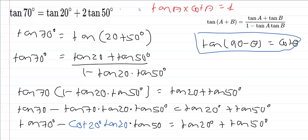In that case, what we are left with: 1 multiplied by 1 multiplied by tan 50° will be tan 50° only, which is equal to tan 20° plus tan 50°.